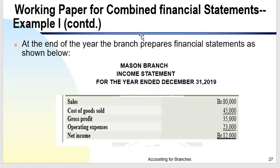Looking at the separate financial statements of the branch: the cost of goods sold is $45,000 — because shipments from the home office were $60,000 and the ending inventory is $15,000, so cost of goods sold is $45,000. The branch has sales of $80,000, cost of goods sold of $45,000, and operating expenses of $23,000 — which is the $20,000 payment of operating expenses plus the $3,000 allocated by the home office. Net income of the branch is $12,000.